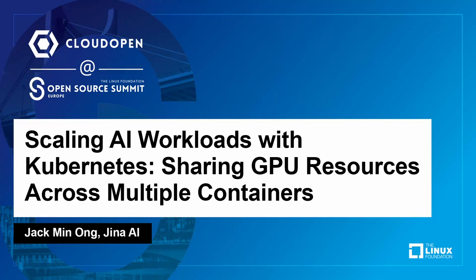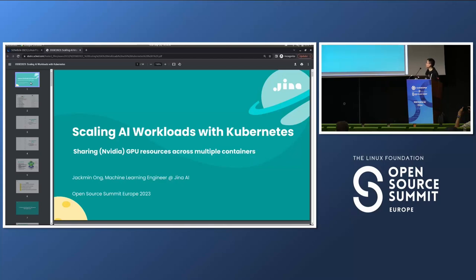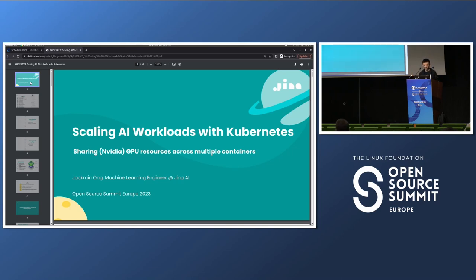Hello everyone. My name is Jackmin Ong. I'm a machine learning engineer at Gena AI, and today I'll be talking about scaling AI workloads with Kubernetes — sharing GPU resources across multiple containers, and more specifically NVIDIA GPUs. Because if you're running AI workloads, most likely the GPU you're using is going to be NVIDIA, so this talk will be quite specific to NVIDIA GPUs.